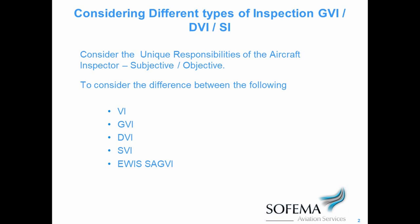Special inspection refers to NDT techniques — for example, radiographic, magnetic particle, eddy current, ultrasound, and dye penetrant. All of these are considered special visual inspection processes and techniques.